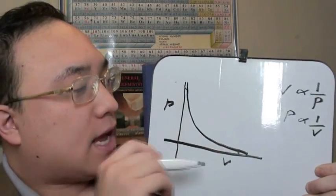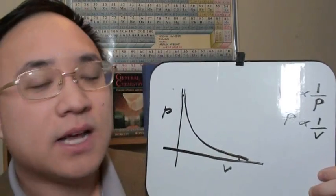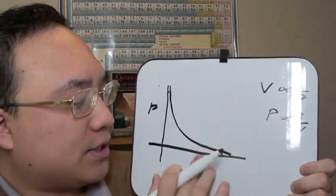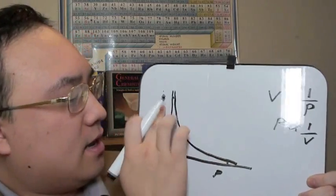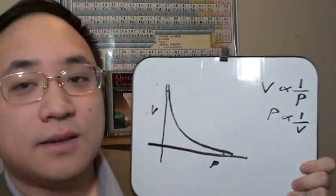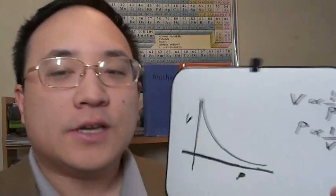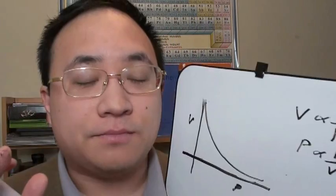So that's how we do it. That's how we represent Boyle's Law in a graphical setting. As V goes up, P goes down. As P goes down, V goes up.